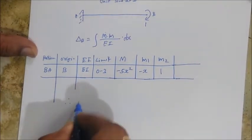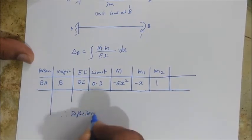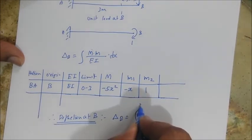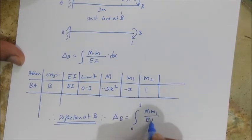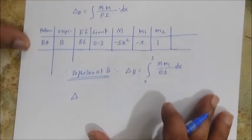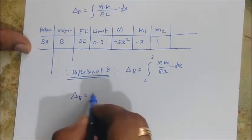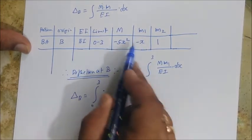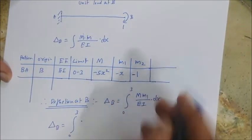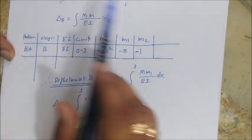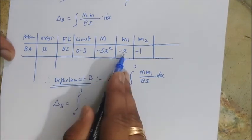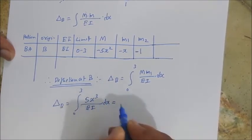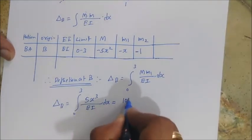Let's solve it with the integration part. Deflection at B: Delta B is equal to integration 0 to 3, M times M1 by EI dx. Let's substitute the values. Delta B equals integration 0 to 3, M is minus 5X squared and M1 is minus X. Here one more thing, I forgot to write minus 1 there because it's hogging, same sign convention. Both are minus, M and M1 both are minus, so I'll write 5X cubed by EI dx. So answer is 101.25 by EI.